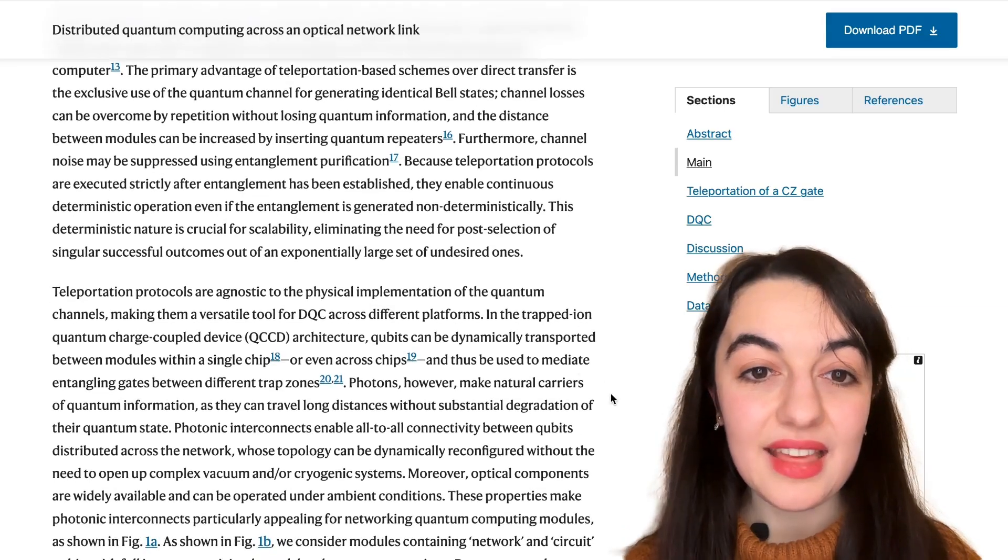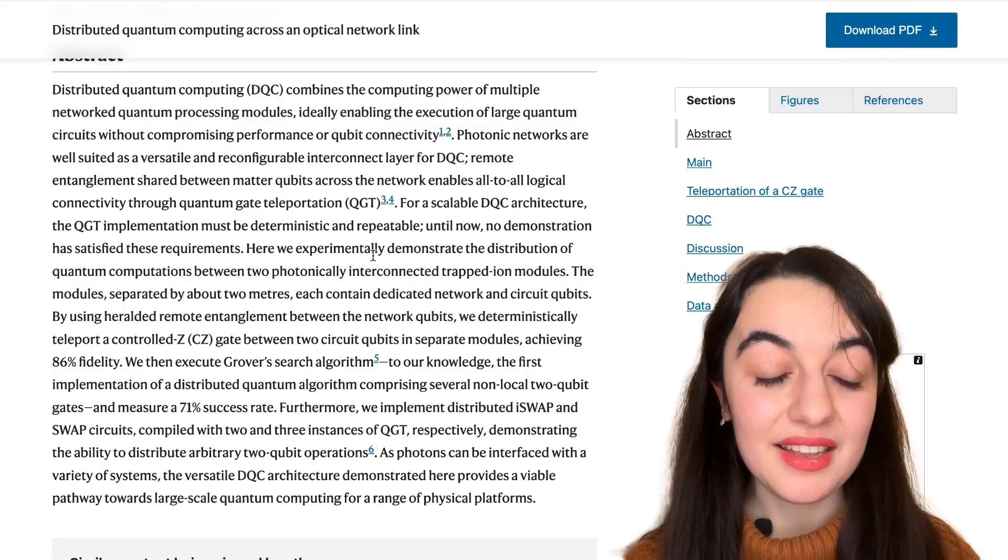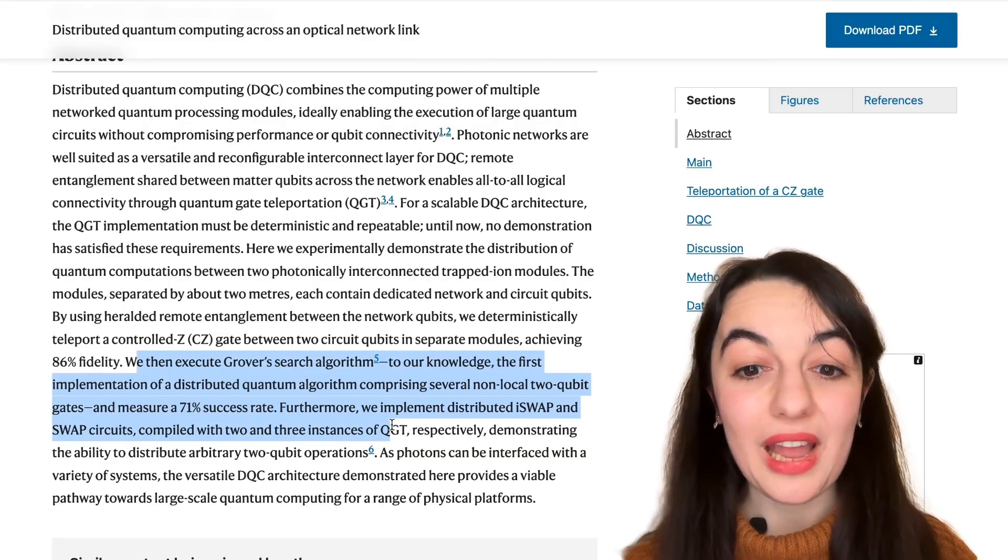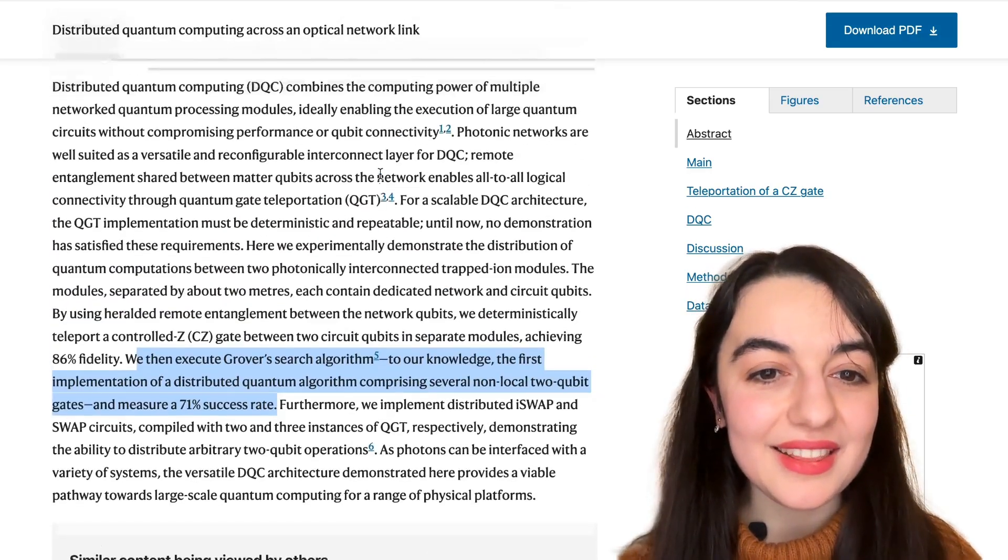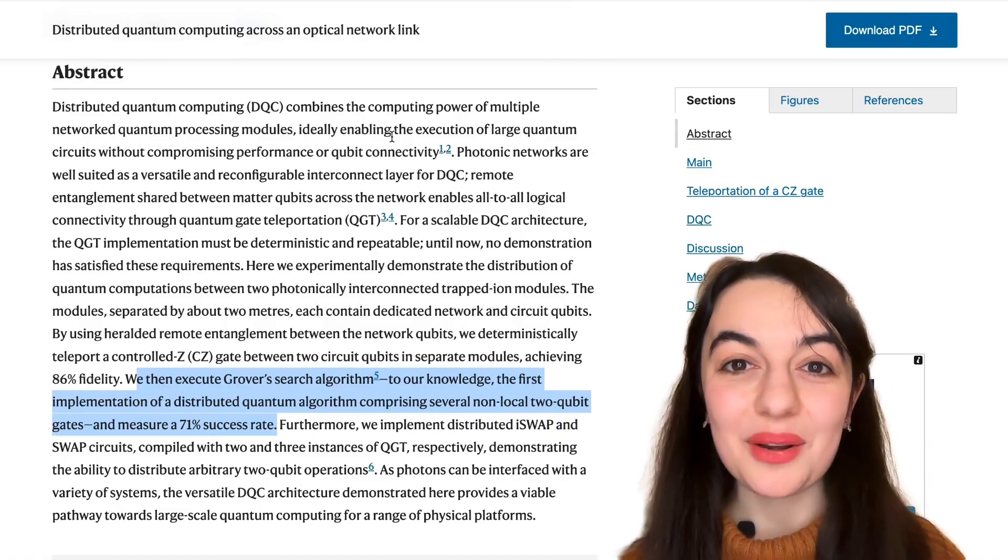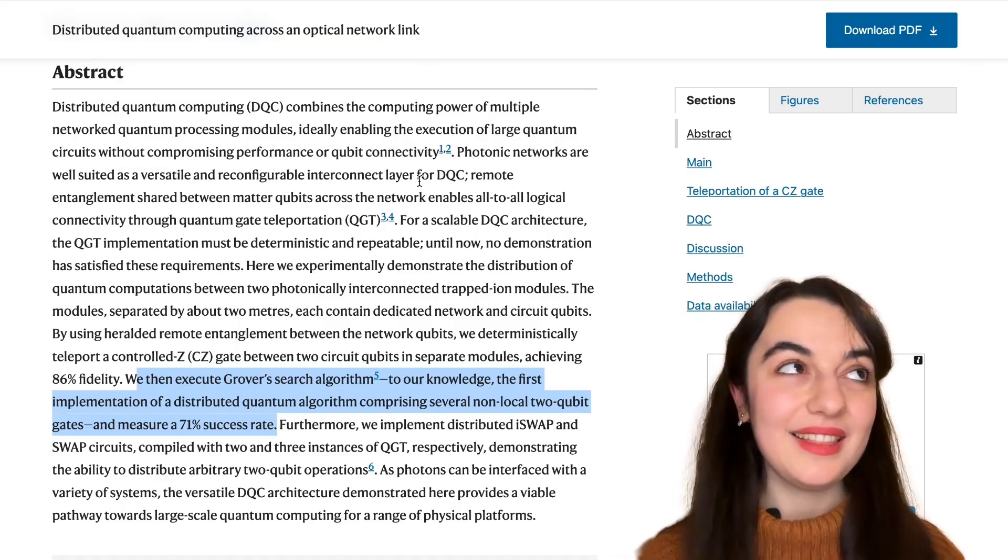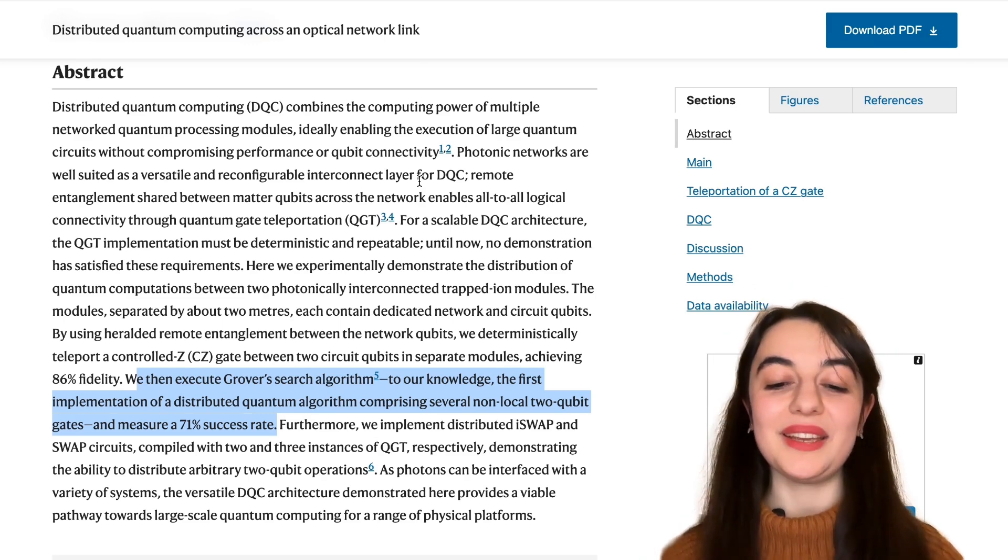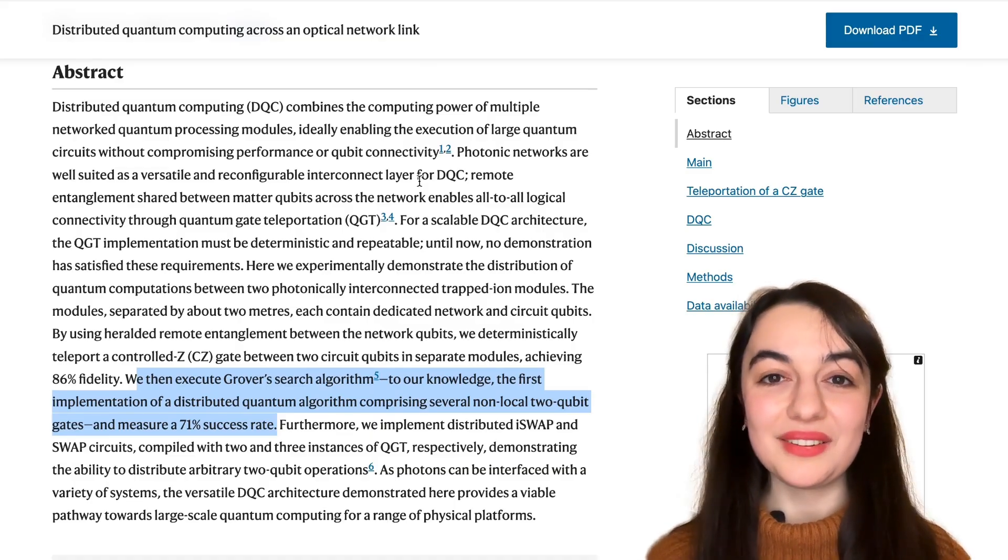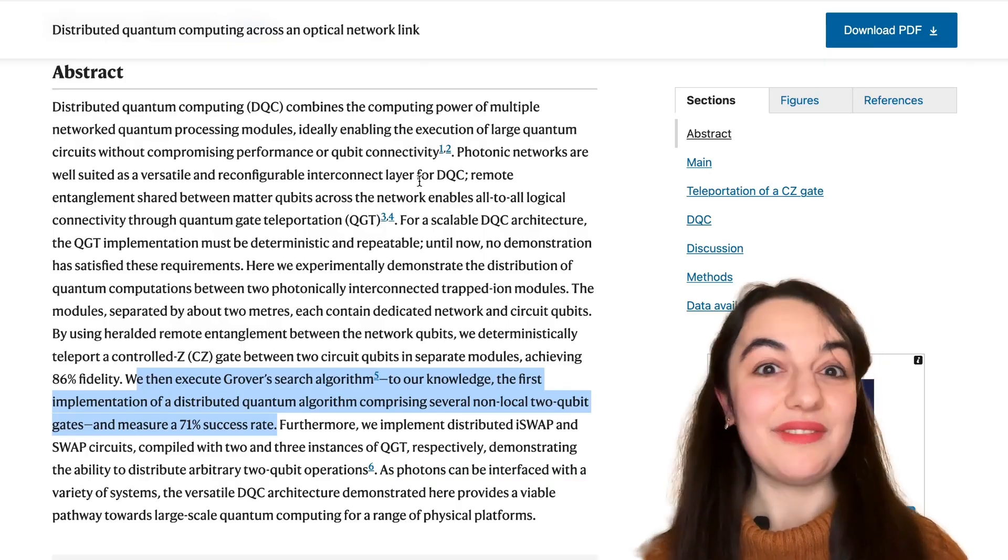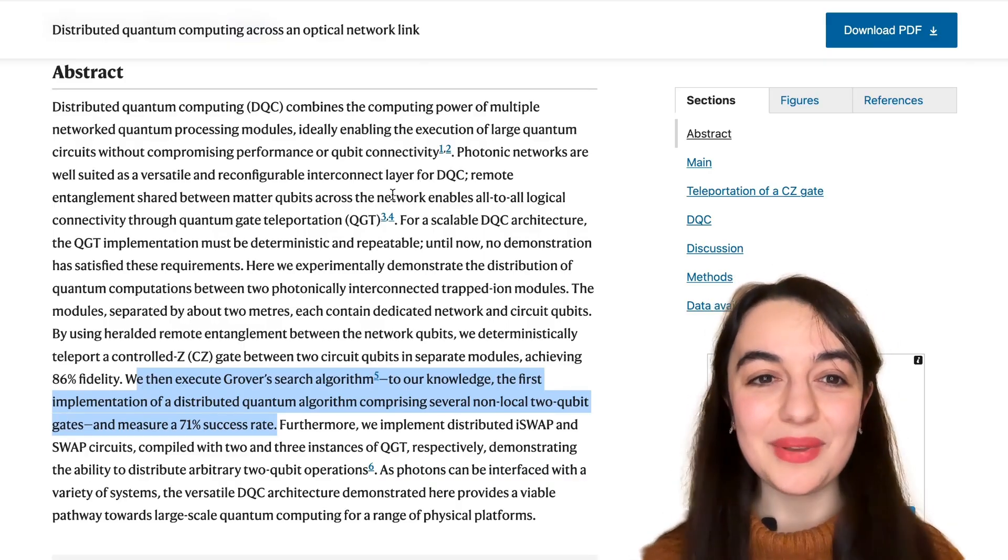And they believe it's the first time that an algorithm has been implemented in this distributed way, as mentioned here. It's a cool experiment. I really like the conceptual idea of quantum gate teleportation that you can kind of implement these gates using the entanglement and classical information being shared and then not need to actually do a quantum operation between these distant locations. You can still effectively implement a gate between those distant locations. So it's a really cool concept to be implementing.